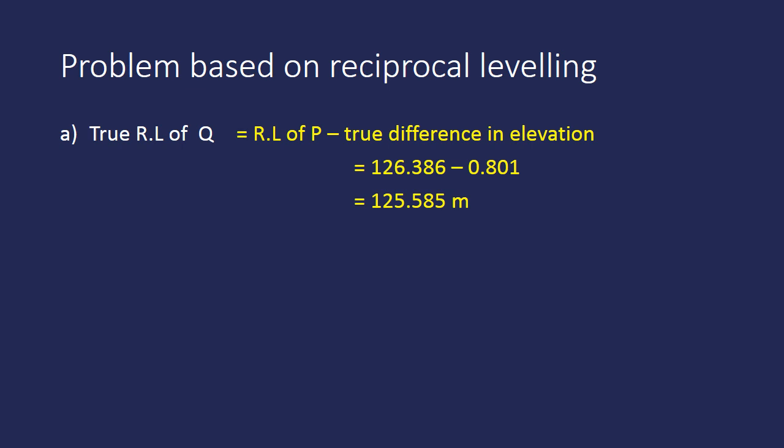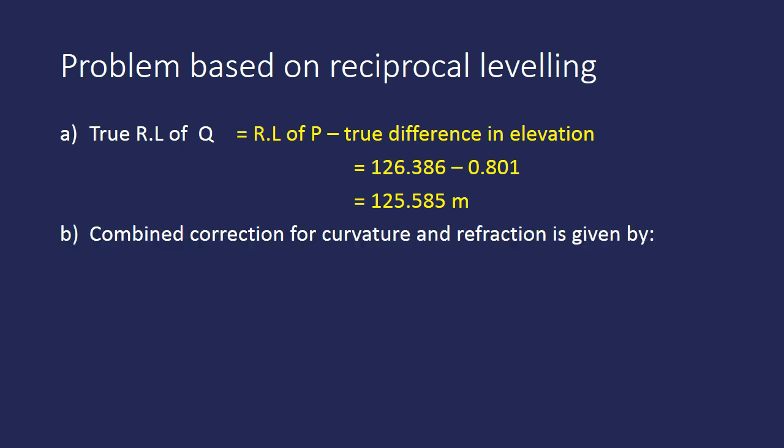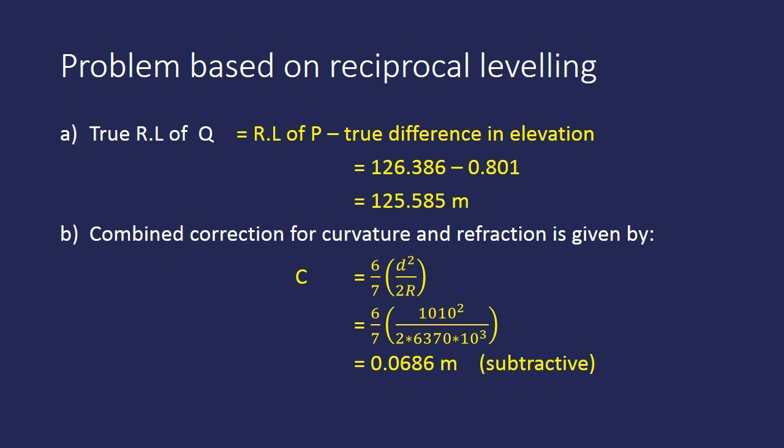Now let us find the combined correction for curvature and refraction. It is given by the formula C = (6/7) × d² / (2R), where d is the distance between P and Q (1010 m) and R is 6,363,700 m. Substituting these values into the formula gives a combined correction of 0.0686 m, which is subtractive in nature.